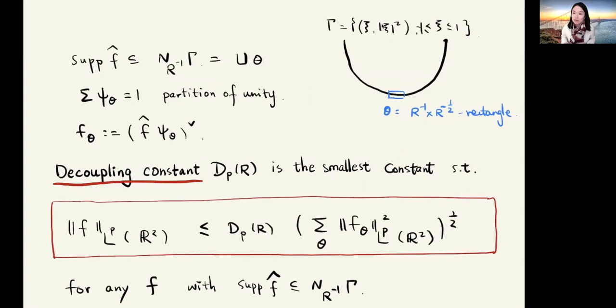Consider a function f with Fourier transform supported on a thin neighborhood of this truncated parabola gamma. This thin neighborhood is 1 over r neighborhood, and r is a very large parameter. We decompose this neighborhood into finitely overlapping rectangles theta of size 1 over r times r to the minus a half. Then we perform a partition of unity adapting to this covering theta. f_theta is defined as f pre-restricted on each theta using the partition of unity.